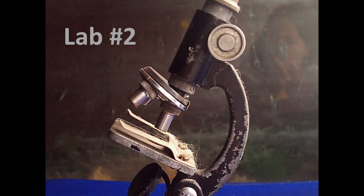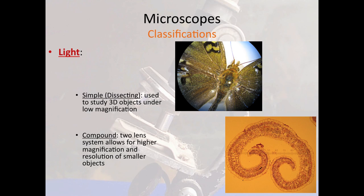This is the PowerPoint presentation for Lab 2 of the Bio 191 Lab Manual at Boise State University. The topic of the week's lab is microscopes and the things that we can see through microscopes.